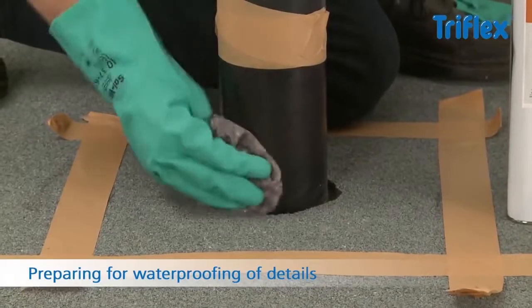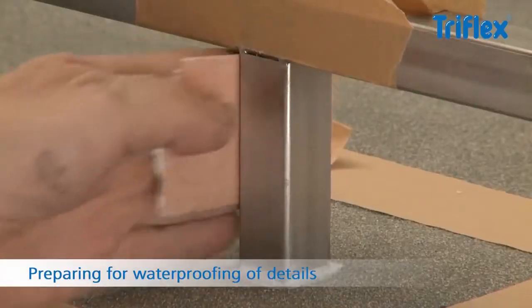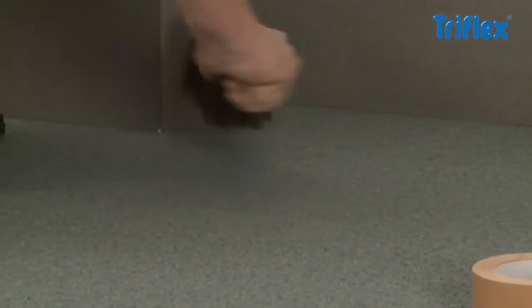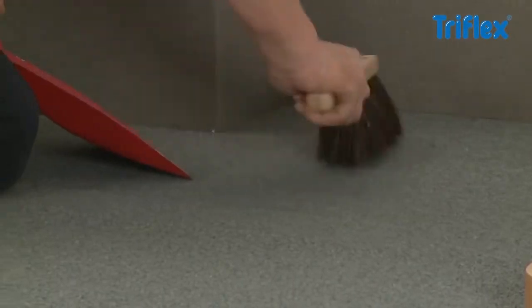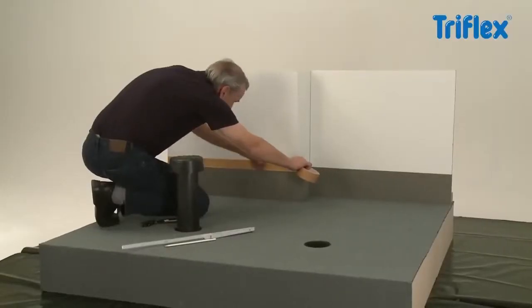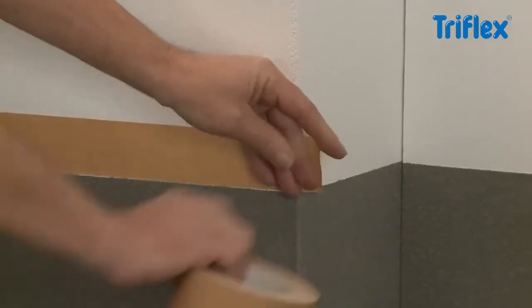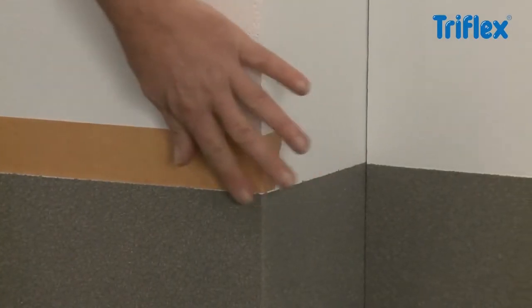Firstly, prepare all surfaces to be waterproofed. Dependent upon the material, the substrate needs to be degreased, sanded or generally roughened. Any dust and loose particles are removed. All details are then masked off to allow for a clean finish.